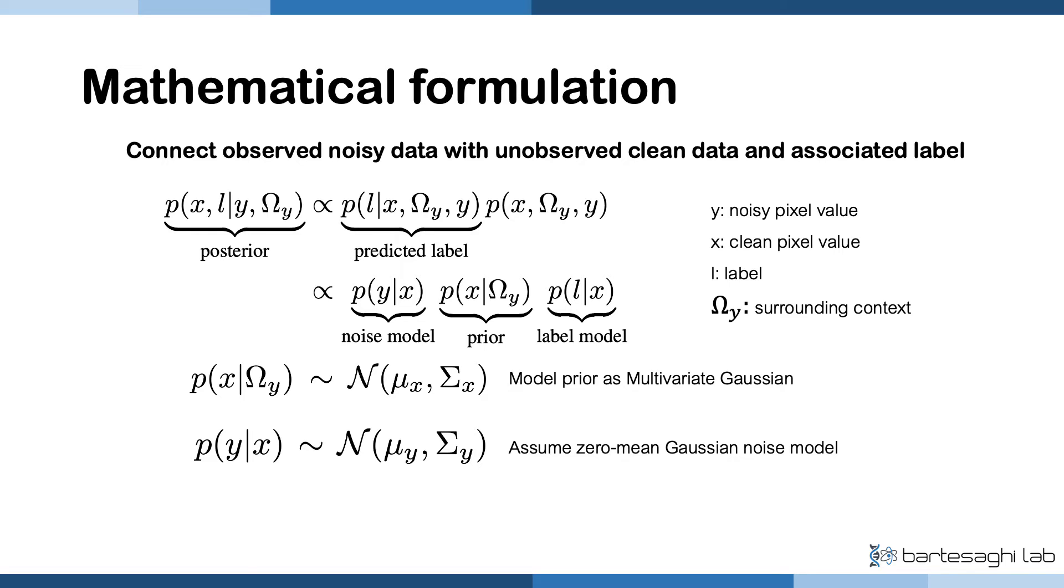We have two major assumptions. The clean pixel value x depends on both the noisy value y and its surroundings omega y, and the label only depends on the clean signal x. We can model our prior belief as a multivariate Gaussian, and we also assume zero-mean Gaussian noise, which is a common assumption in cryo-EM. Following the assumptions, we can train a network to map the context omega y to the mean and covariance of clean signal, and subsequently map the estimated statistics to the label L. And we solve x and L by maximizing the likelihood.